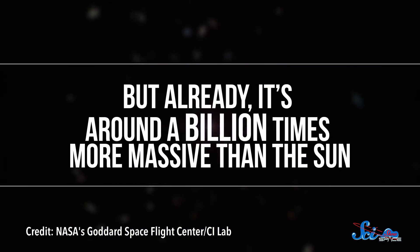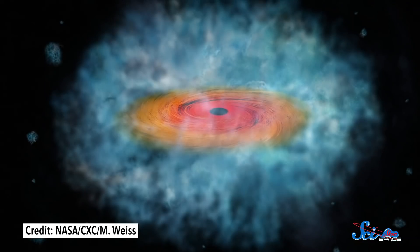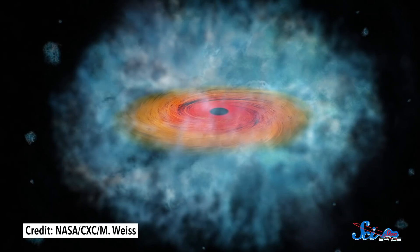But already, it's around a billion times more massive than the Sun. That's one heck of an appetite, and we're not sure how that would happen. One idea is that black holes just collapse directly from giant clouds of gas and dust in the early universe.